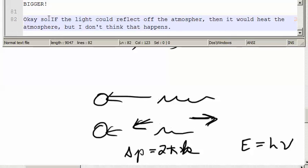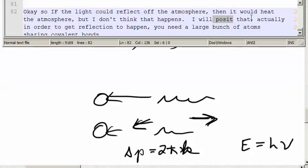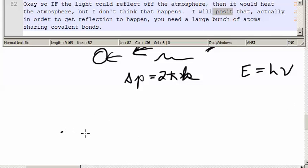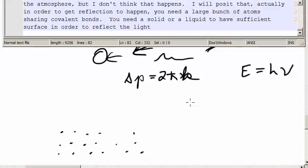Okay, so if the light could reflect off of the atmosphere, then reflecting off the atmosphere would heat the atmosphere. But I don't think that happens. I will posit that actually, in order to get reflection to happen, you need a large bunch of atoms in covalent bonds with each other. You need a solid or a liquid. You need a solid or a liquid to have sufficient surface in order to reflect the light.